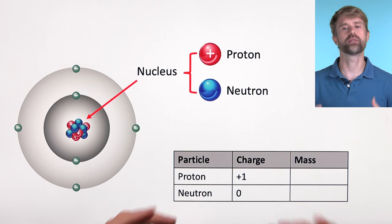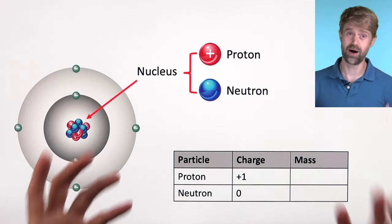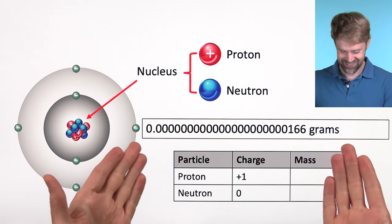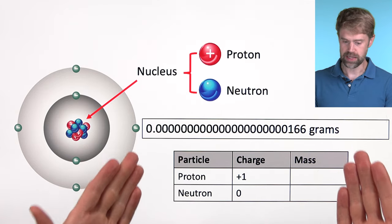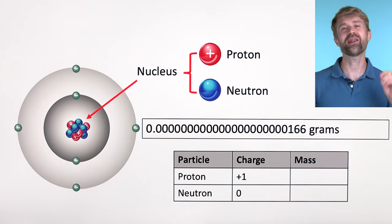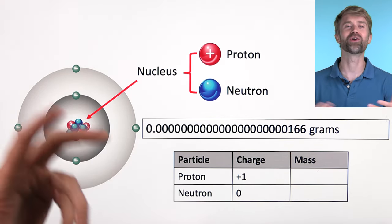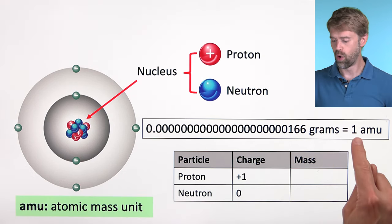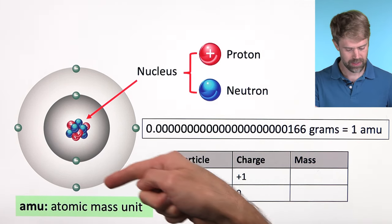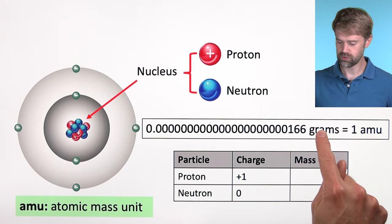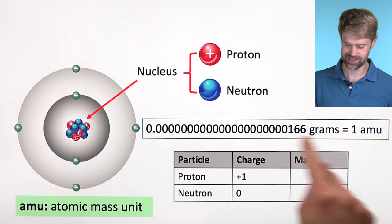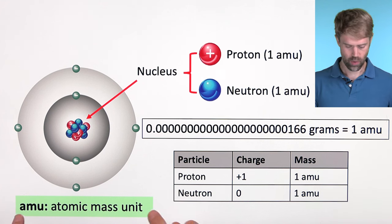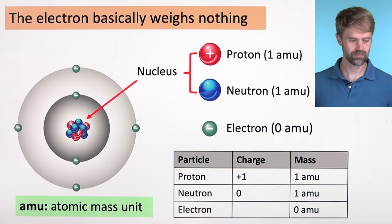Now how much do these particles weigh — in more technical terms, what is their mass? Honestly, they don't weigh much; they're tiny. If we wrote their mass in grams it would be a very long decimal. So instead we say that this tiny amount equals one AMU, which stands for atomic mass unit. That's a lot easier than writing out all those zeros. Both the proton and the neutron weigh one atomic mass unit.